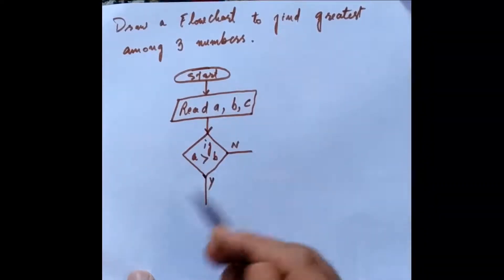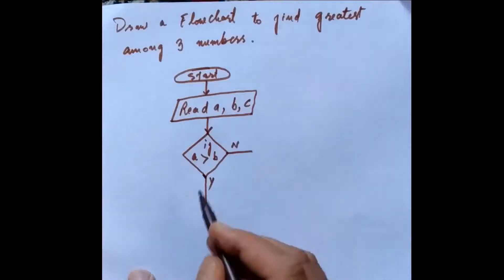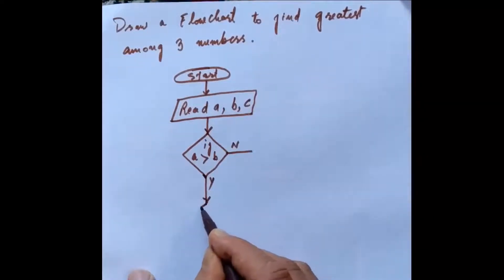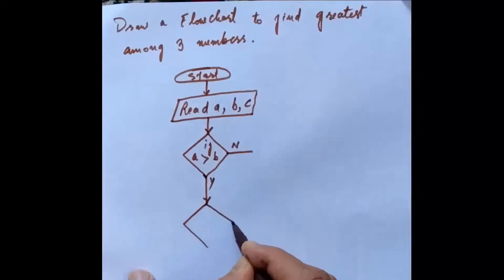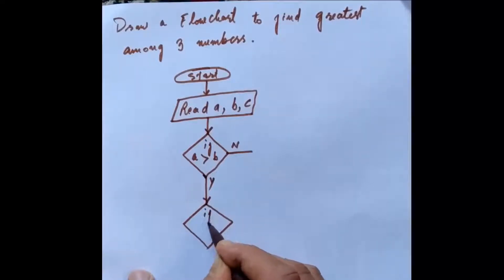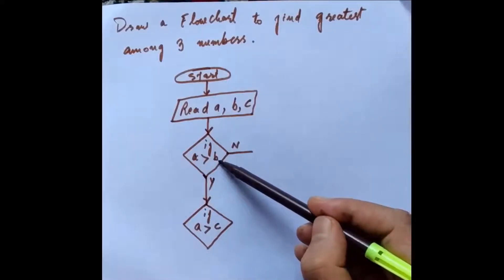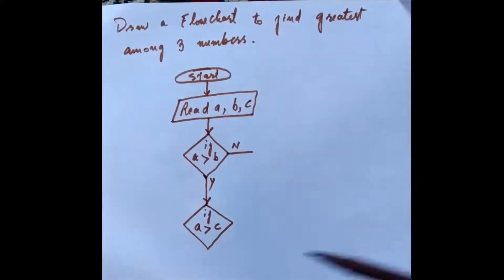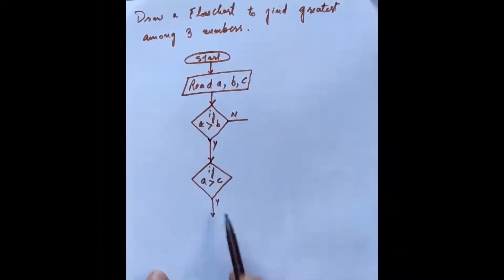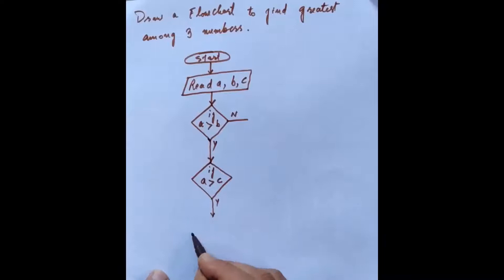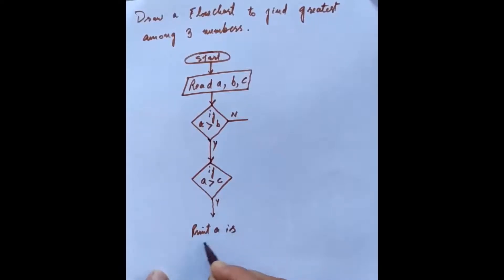If A is greater than B, then I have to compare A with C also. So I will make another decision box to compare A with C. I will write: if A is greater than C. A is already greater than B, now I compare A with C. If in both cases A is greater, I will write yes. So here A is greater, and here also A is greater. Then I will write: Print A is greater.